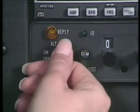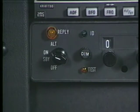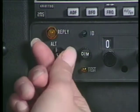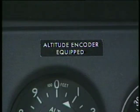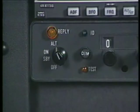When you select on, the transponder begins to reply to interrogations from radar sites. This setting is sometimes referred to as the normal or mode A setting. The altitude or mode C setting is selected by turning the knob to ALT. If your aircraft has automatic altitude reporting equipment, your altitude will be displayed on the controller's screen. This light is called the reply monitor light. It flashes every time the transponder replies to an interrogation. It's a good indicator that the transponder is working.